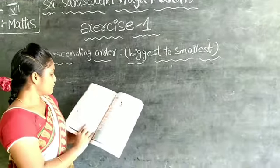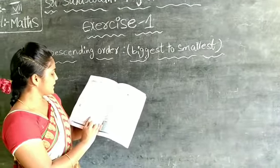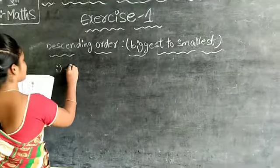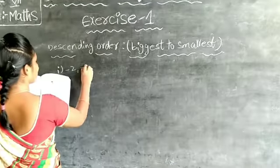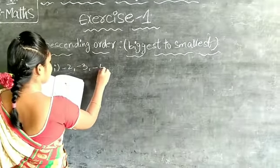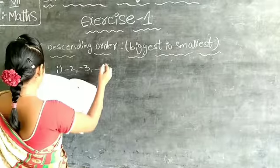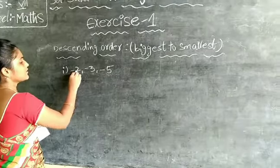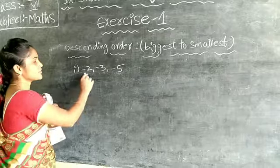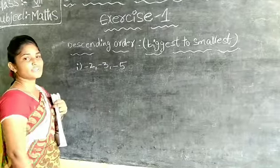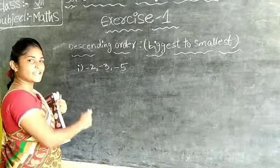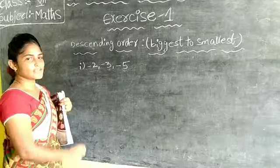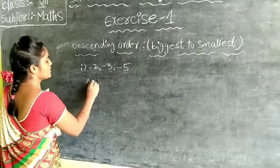Write the following integers in descending order. Here are the integers: the first one is minus 2, minus 3, minus 5. Now, the given integers are negative integers. So, if you find out here ascending order and descending order.